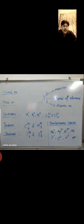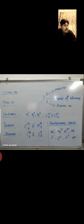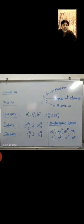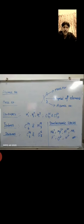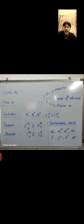Now isotones — this is the first time you're hearing this topic, since in class 9th you only discussed isotopes and isobars. Isotones are different atoms of different elements having different mass numbers and different atomic numbers, but the same number of neutrons. For example, if you subtract 6 from 14 you get 8, and 8 from 16 you again get 8 — so the number of neutrons is 8 in both cases.